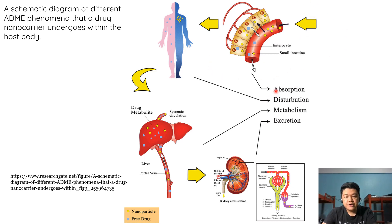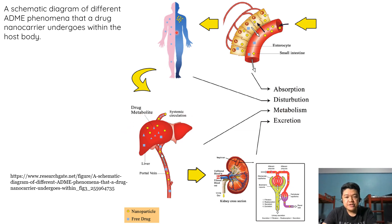In this diagram, absorption occurs in the small intestine — specifically at the enterocytes — where the drug enters the bloodstream. After absorption, the drug is distributed to different parts of the body and reaches the liver, where it undergoes the metabolic process. After metabolism or biotransformation, the drug is excreted through the kidney via the urine.